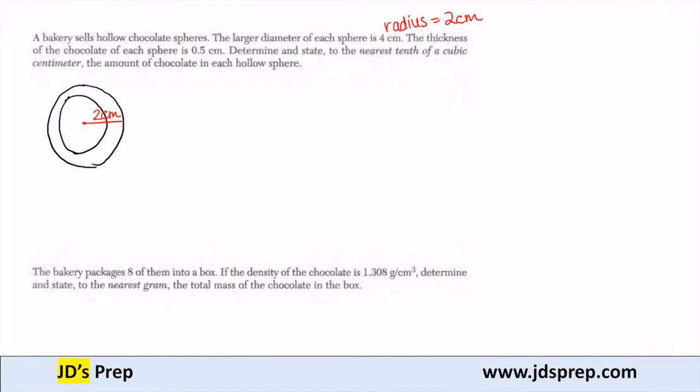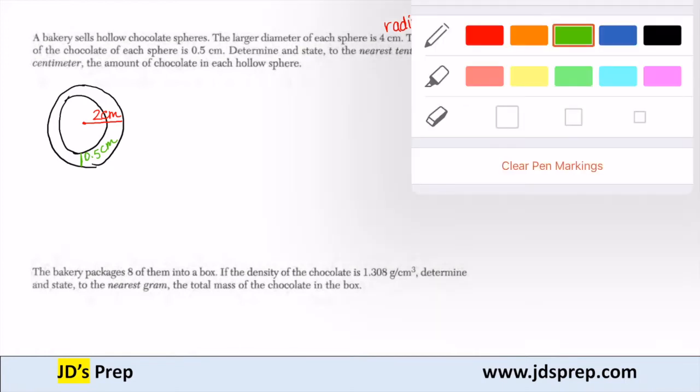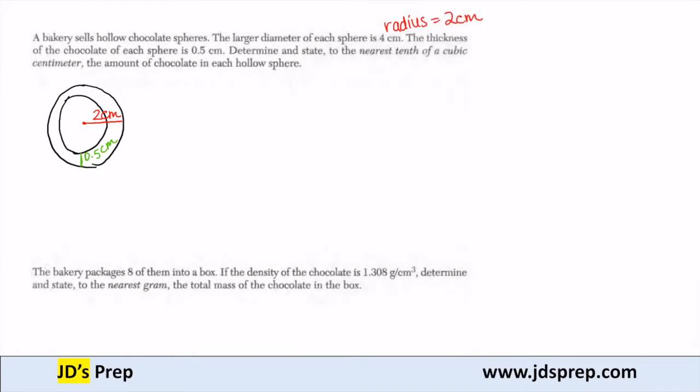The thickness of the chocolate is 0.5. So the thickness or the difference between the outer sphere and the inner sphere is 0.5 centimeters. Since the whole radius of the larger one is 2 and the thickness of the chocolate is 0.5, then what that tells us is the radius of our smaller sphere is 1.5 centimeters.